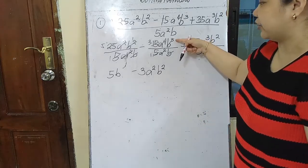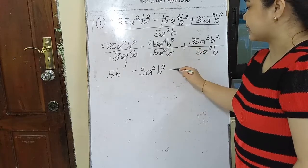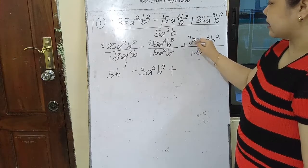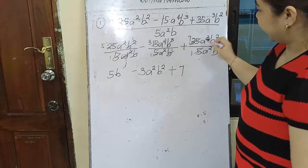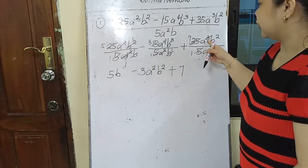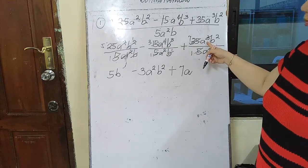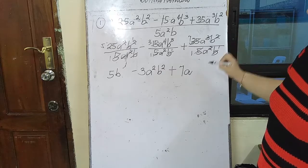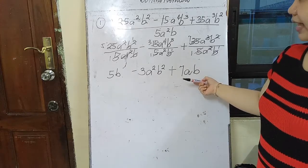We track the exponents: 3 minus the invisible 1. Then 25 divided by 5 is 7. A cubed divided by a squared — subtract exponents, 3 minus 2 — leaves a. B squared divided by b — that's b. The invisible 1 applies again. And this one is the answer.